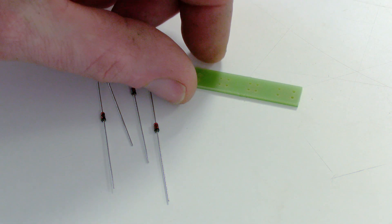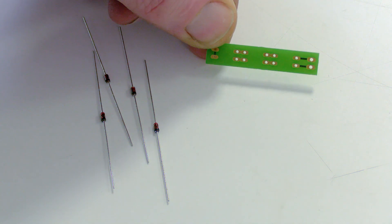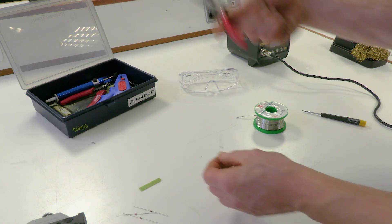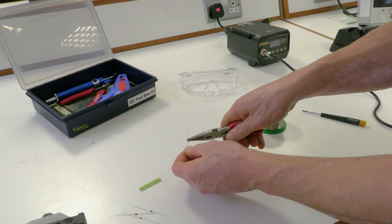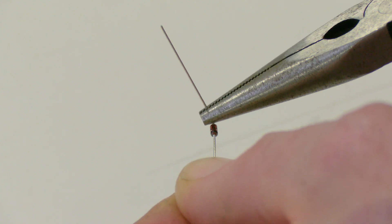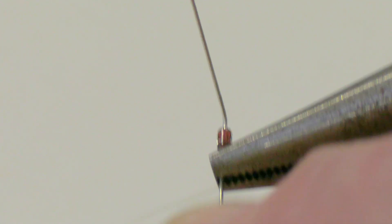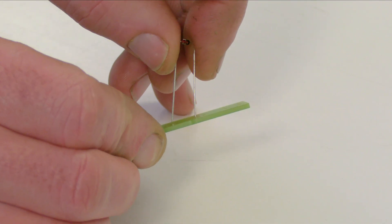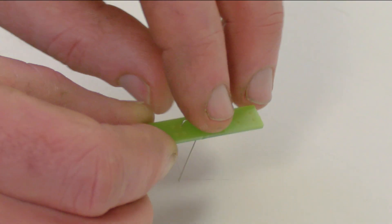To make a through hole solder joint first select the component you want to solder into place on the circuit board. We will use this diode. Grab some pliers from your tool kit and make a right angle bend on each leg of the diode.